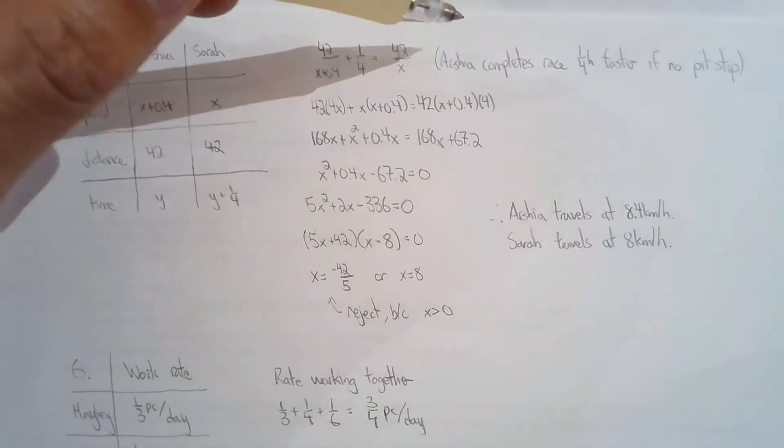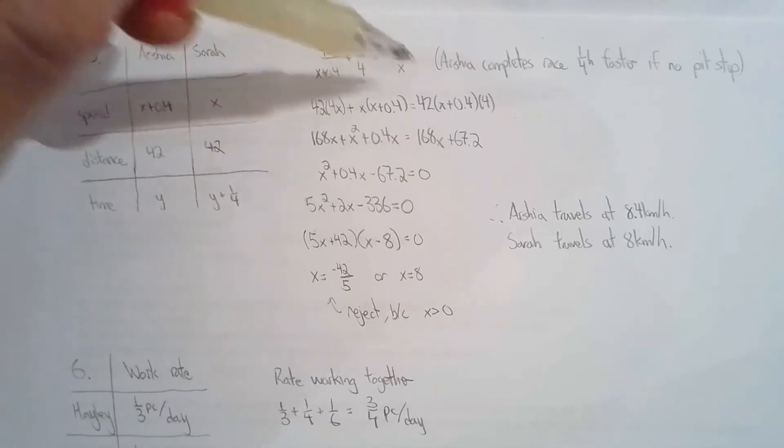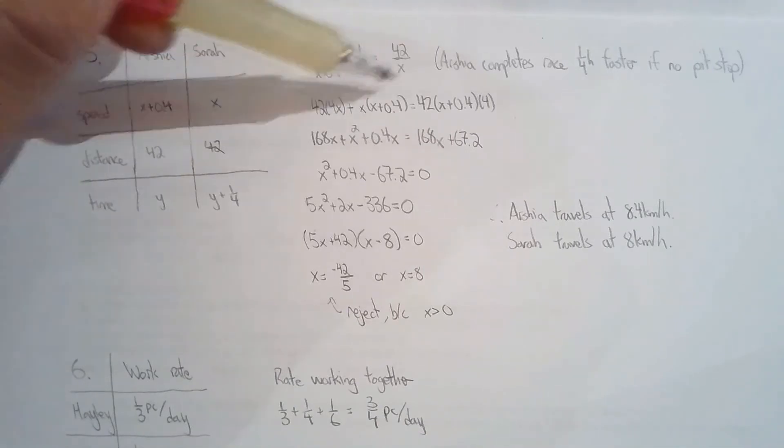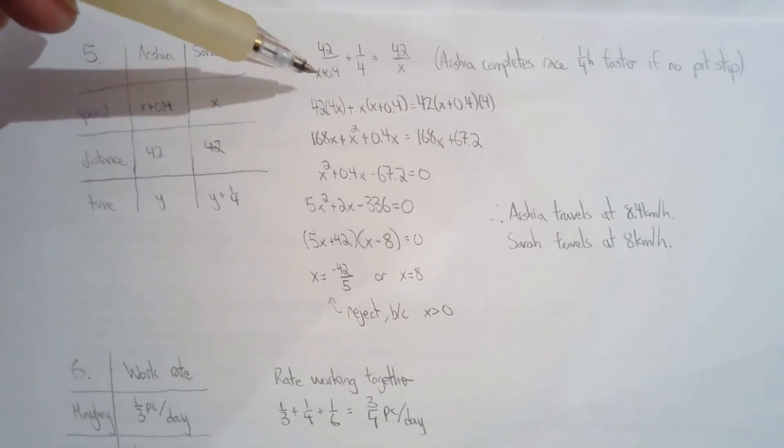If there were no car problems, then she would have finished the race a quarter hour faster. I can use that relationship because this is 42 over x, Sarah's time, and this is Arshia's time. If you take Arshia's time and add a quarter hour, then the times will be the same. That's the hard part of the question. Then solve the equation.